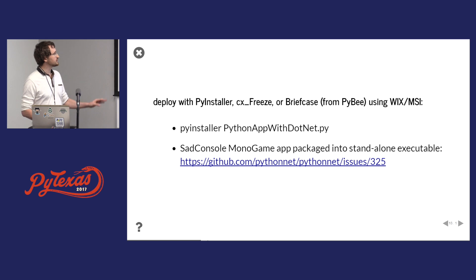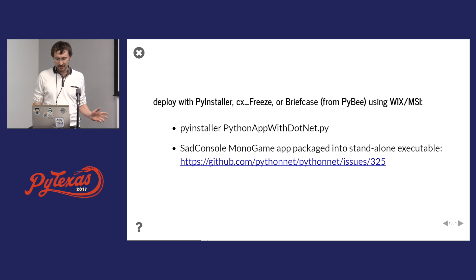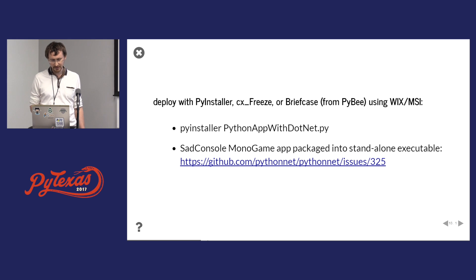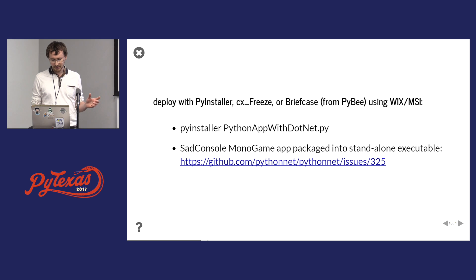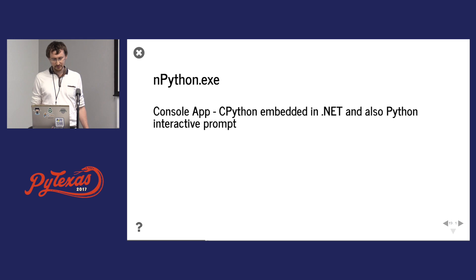It's very easy — you just run PyInstaller with your app name and usually it works as-is. There are built-in hooks that detect the .NET runtime. For example, there's one issue showing a mono game engine that talks to DirectX — it's a pretty complicated application — and it results in just one executable you can build with PyInstaller.